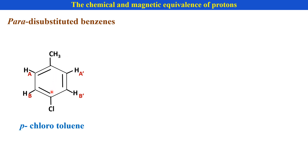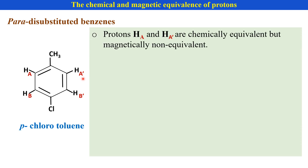In this case also, the aromatic protons HA and HA' are chemically equivalent but magnetically non-equivalent. The coupling of HA and HA' with HB is not the same.